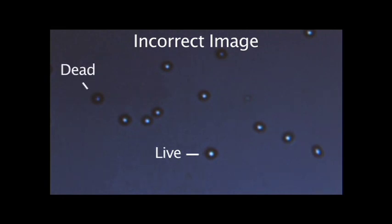Note the difference in this incorrectly adjusted image. In this image, live cells have bright centers and dark edges, but dead cells also have centers that are brighter than the edges and may therefore be counted as live cells.